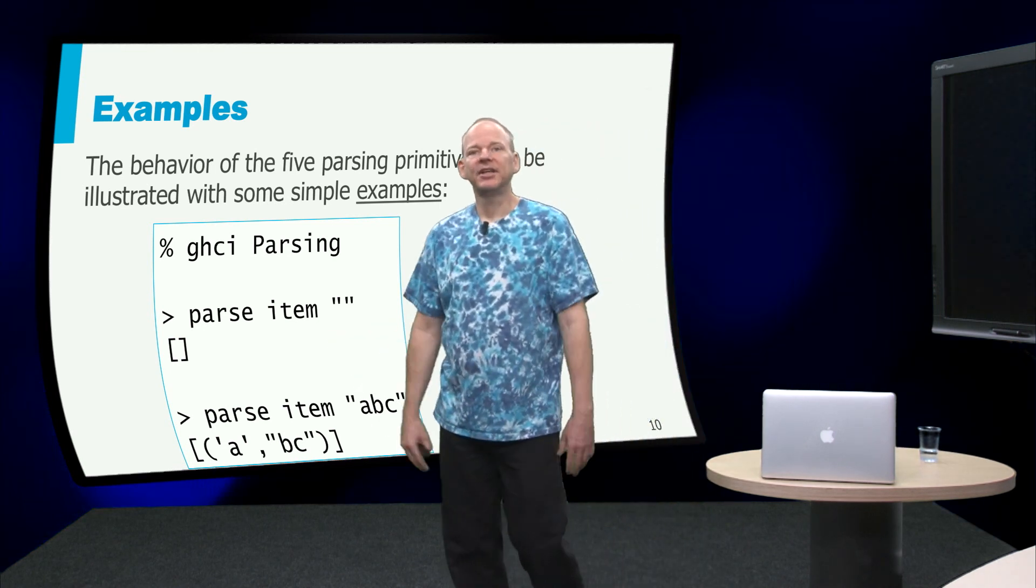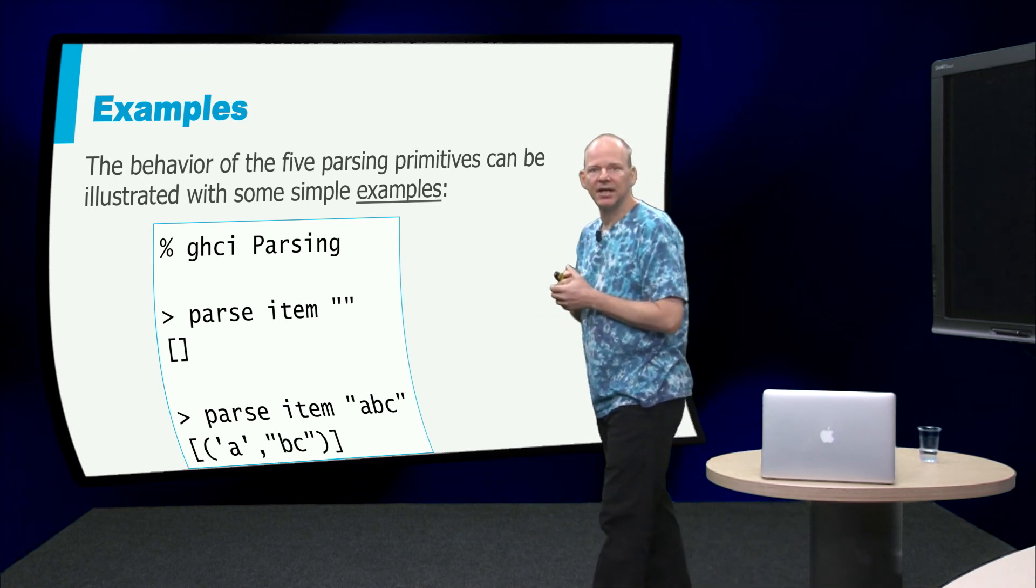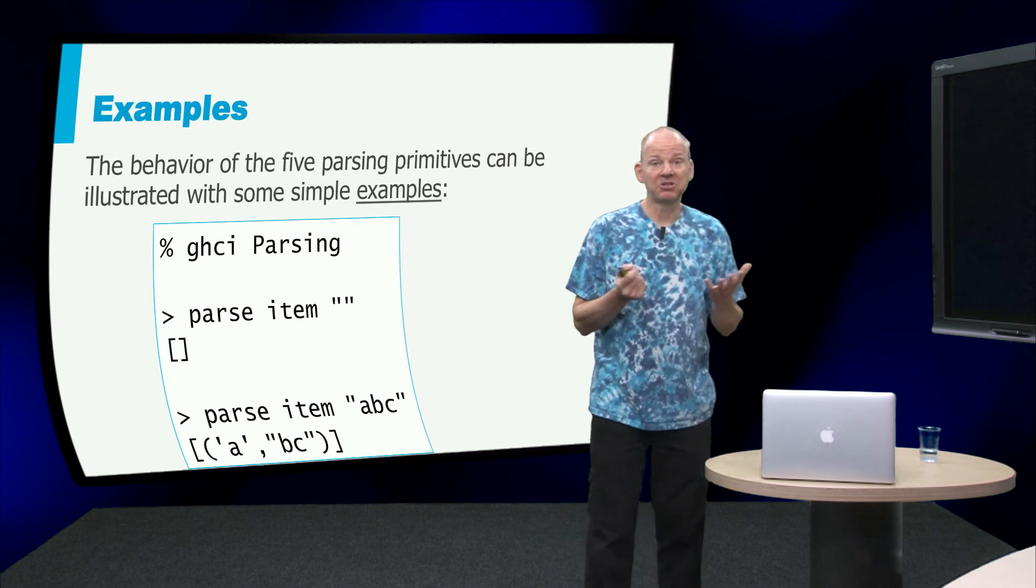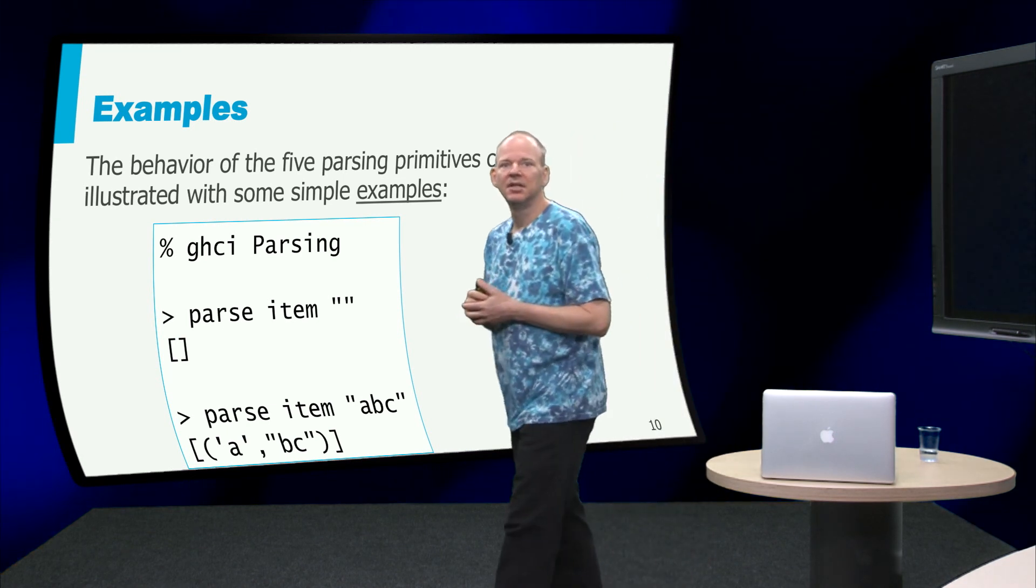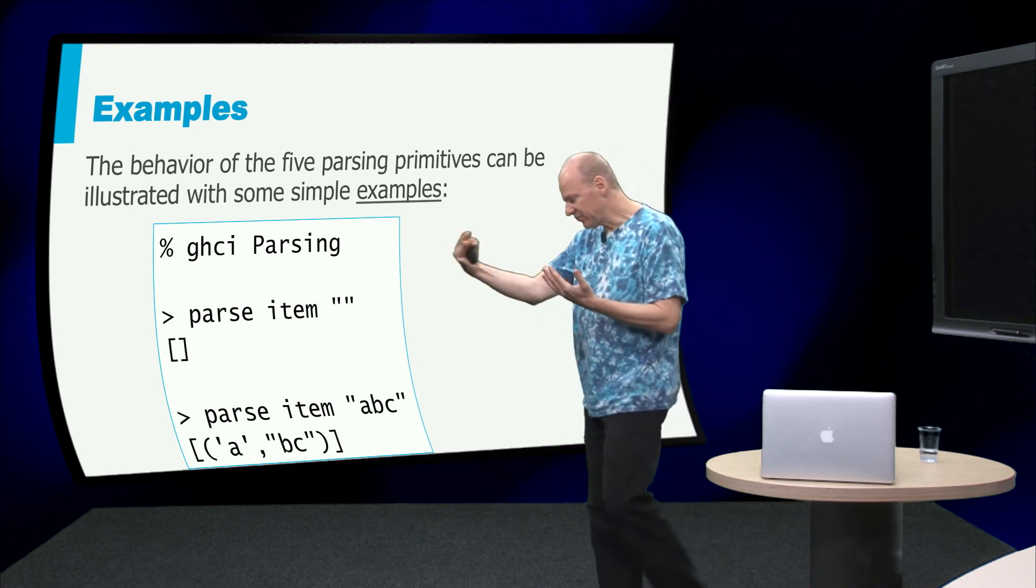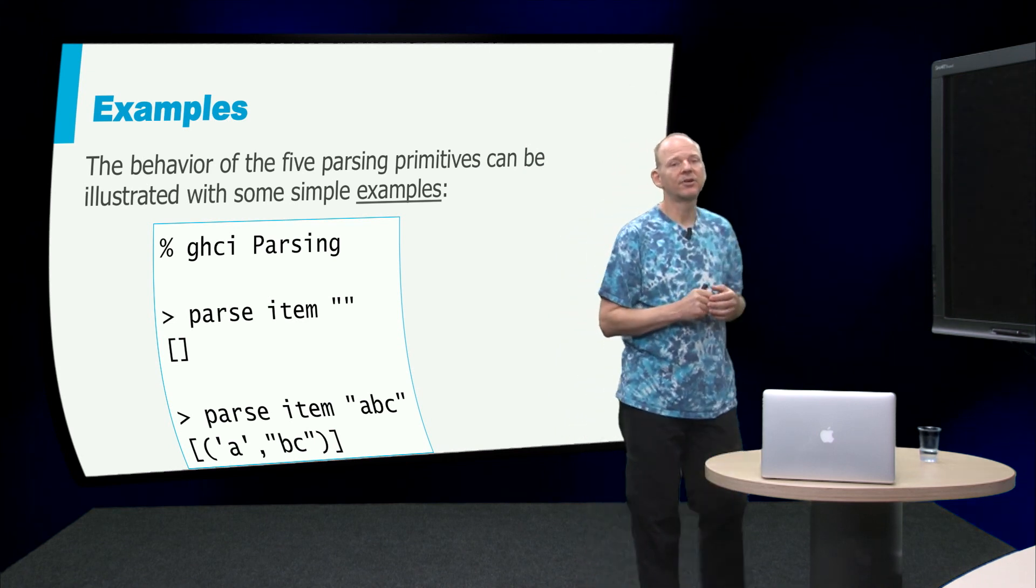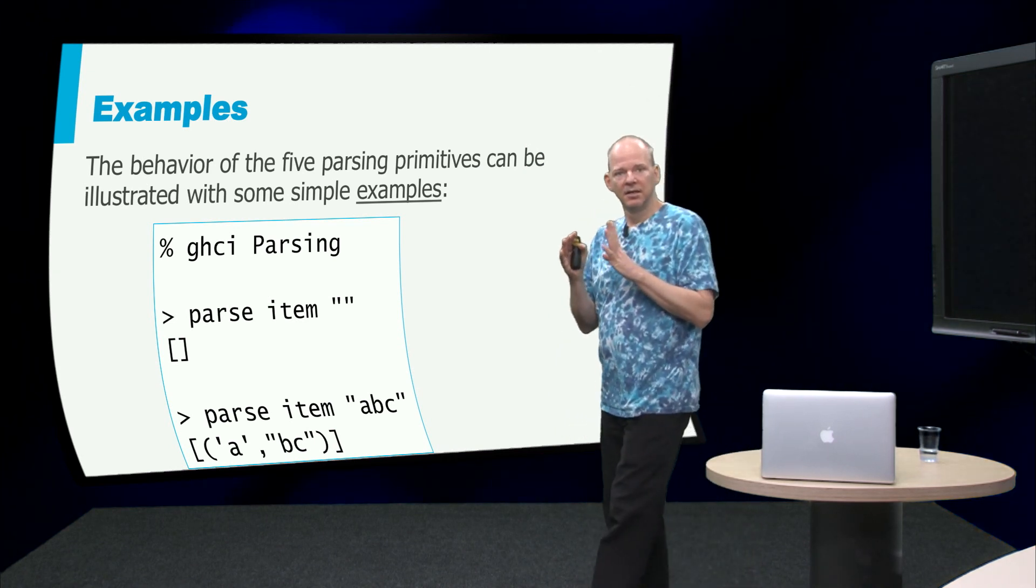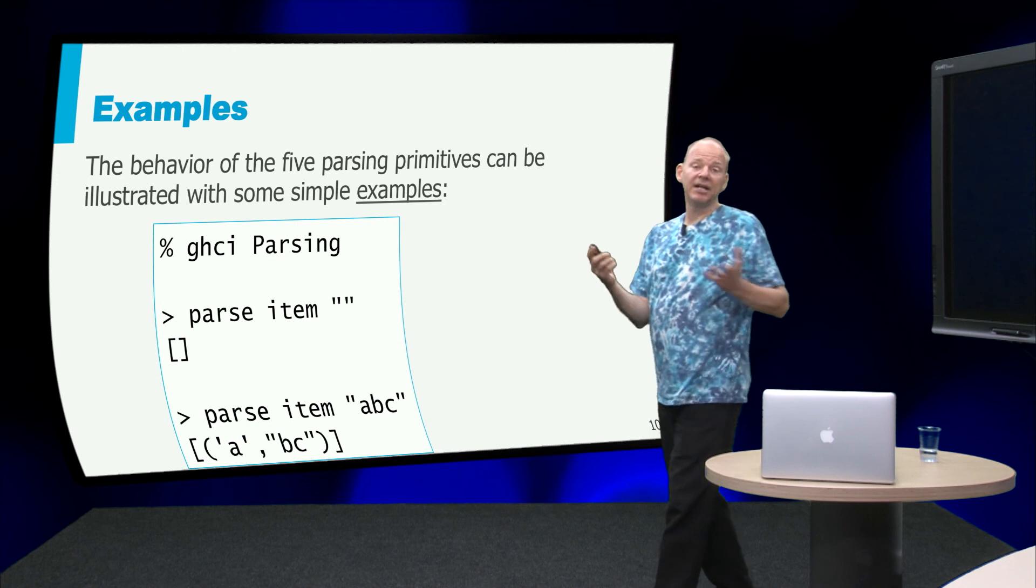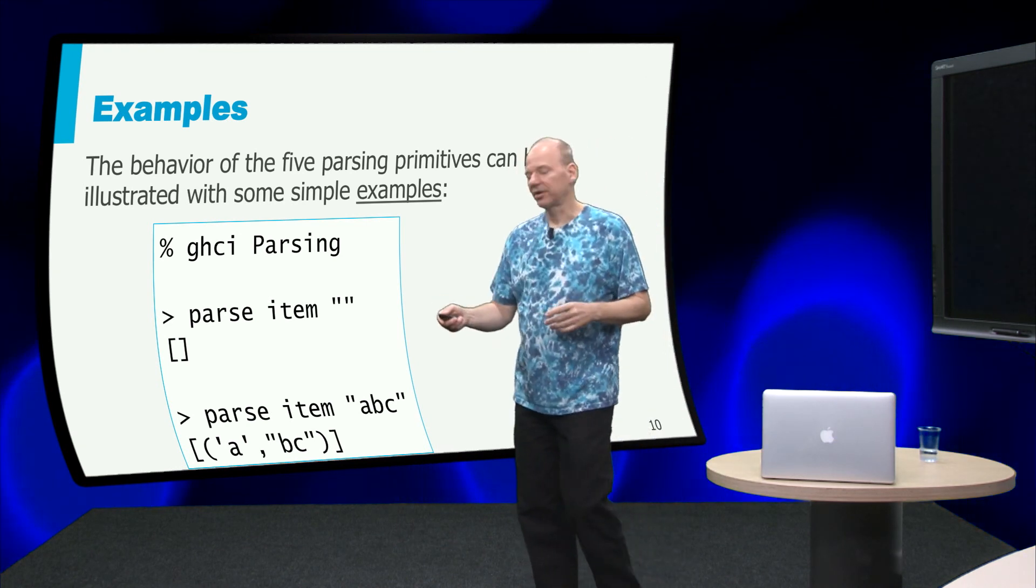Let's open up GHC and check out the behavior of our parsers. So let's take the simple parser and then try to parse something from the empty string. That doesn't work. Now let's try to parse the first value from the string abc. Well, in this case we can extract the first character from the string and what you will see is that it will return the list containing a pair of the first value of the string and the rest of the string. This is just as we defined. So we verify here that our definition of the item parser works as expected.